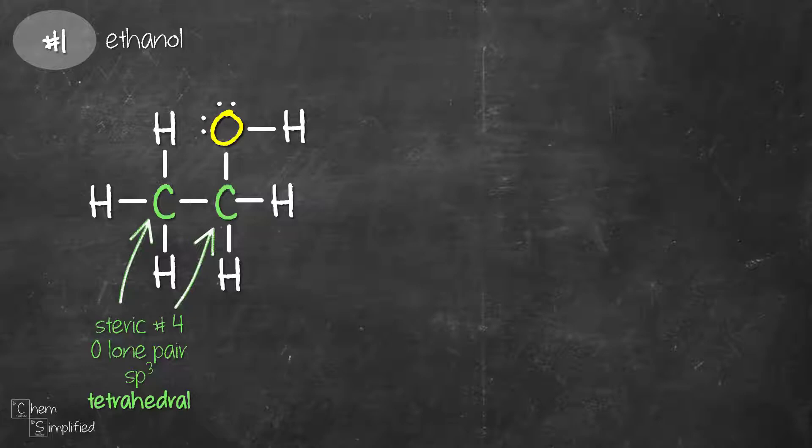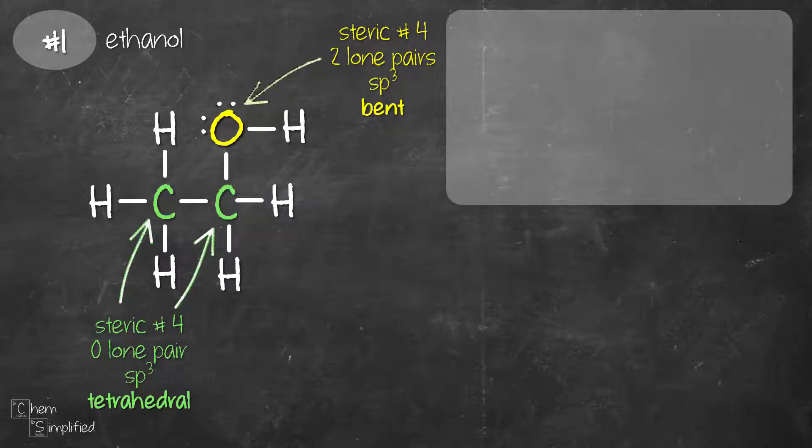The yellow oxygen has 4 groups connected to it, which means it has steric number 4. However, it also has 2 lone pairs. Therefore, the geometry for oxygen is going to be bent and not tetrahedral.